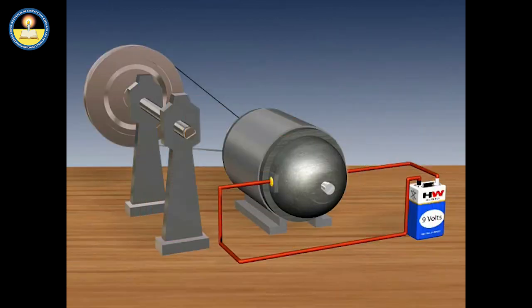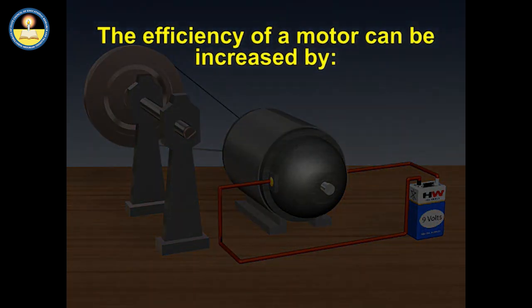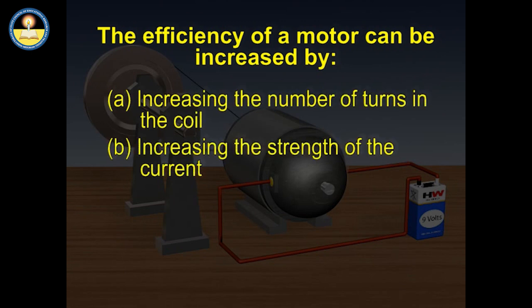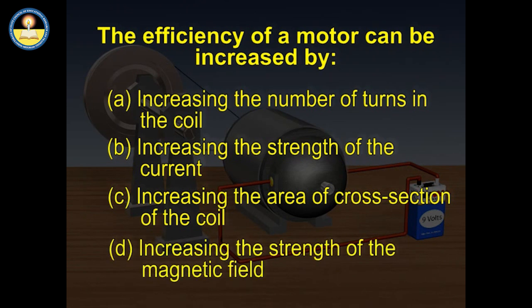The reversing of the current is repeated at each half rotation, giving rise to a continuous rotation of the coil and the axle. The efficiency of a motor can be increased by increasing the number of turns in the coil, increasing the strength of the current, increasing the area of cross-section of the coil, and increasing the strength of the magnetic field.